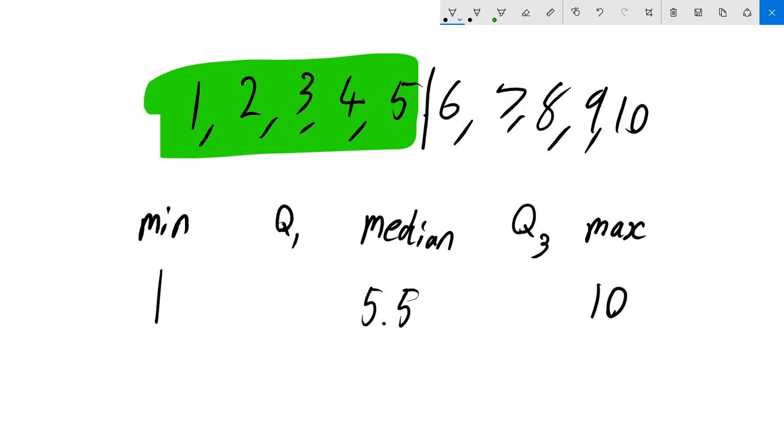But we can use our formula n plus 1 over 2 to work out what it is. In this case we have five numbers. 5 plus 1, 6 divided by 2, 3. Therefore the third number is going to be our median.